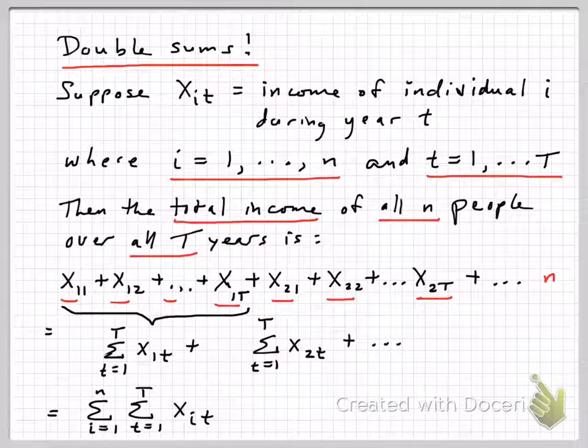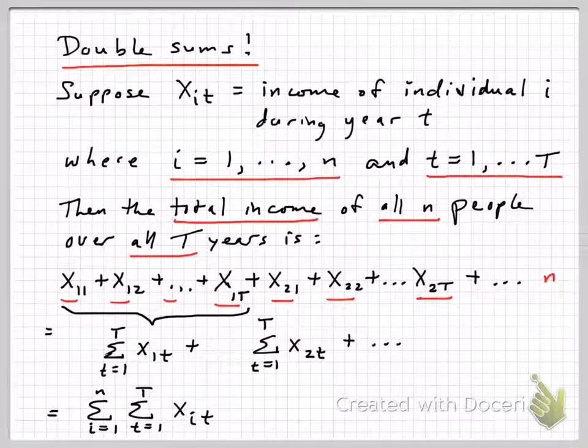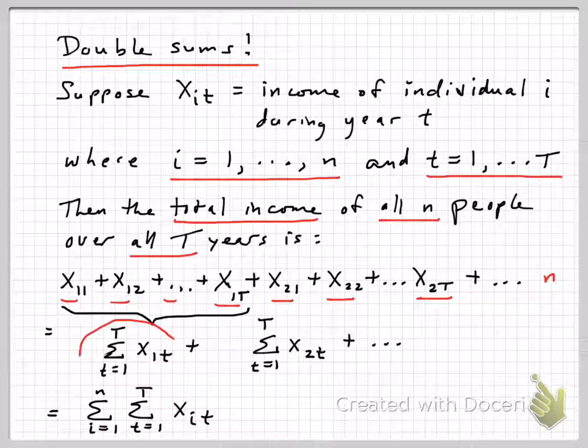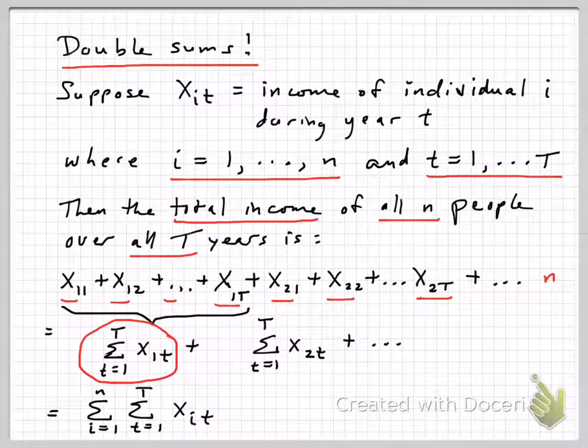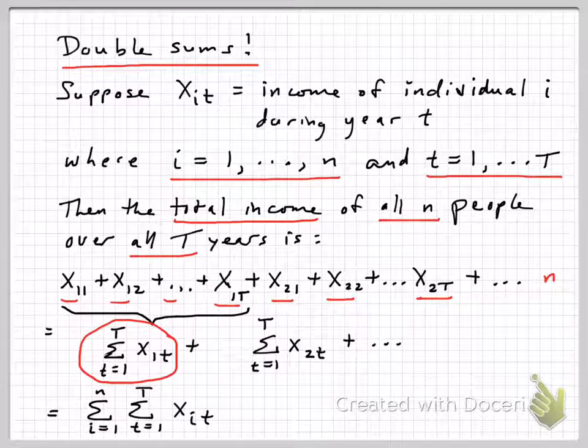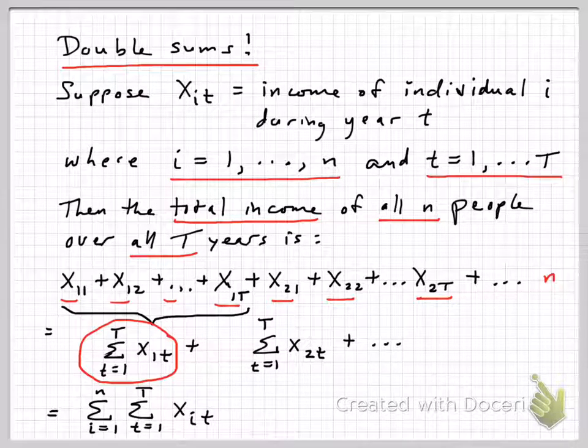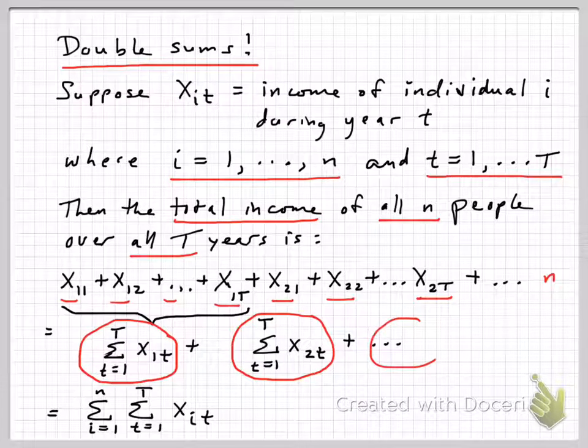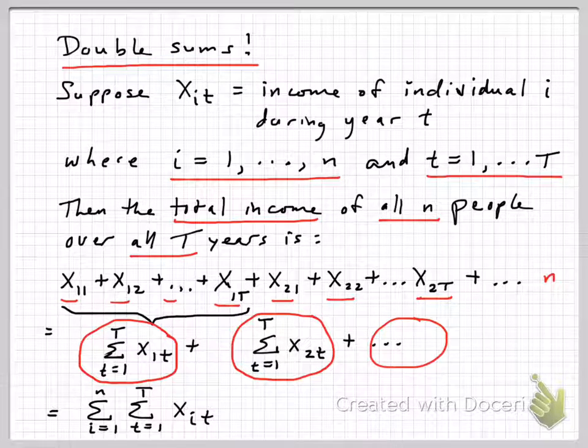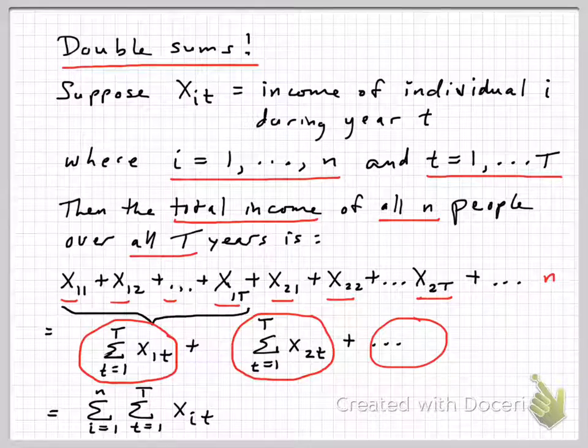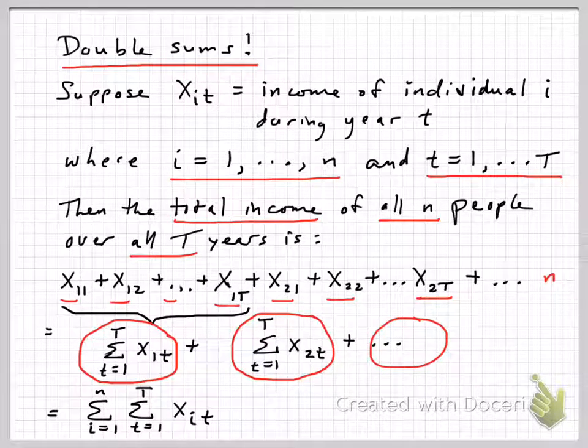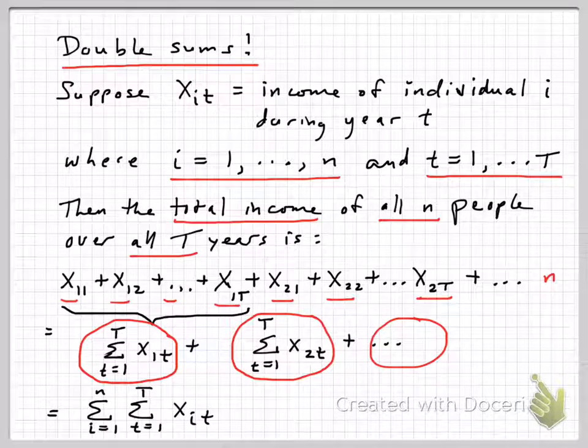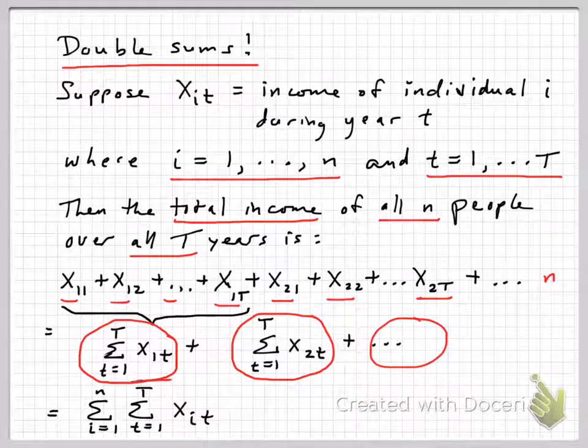Now if you look at that, you can see that what's going on is that we've got individual 1 for all t periods. So we're adding up over all the years from little t equals 1 up to big T for individual 1. Then we do the same thing for individual 2. So we're kind of breaking this into chunks. For each individual, we add up over all the years. And then, of course, we can add those up over all the individuals. And in the end, we end up with this expression at the bottom.